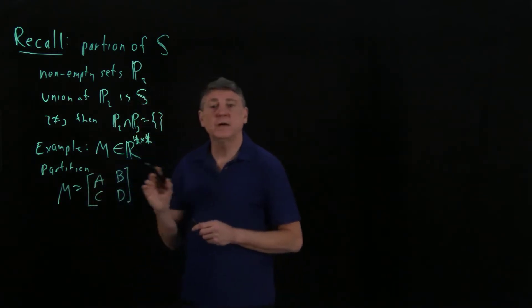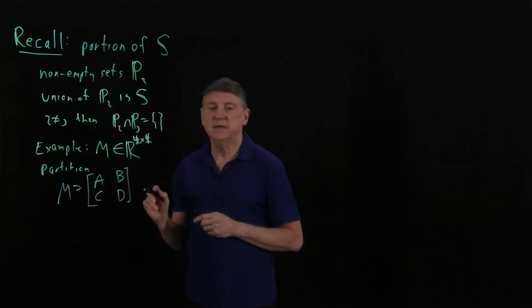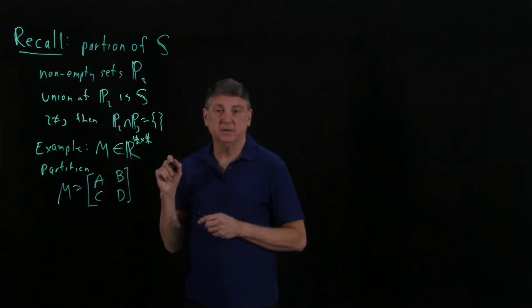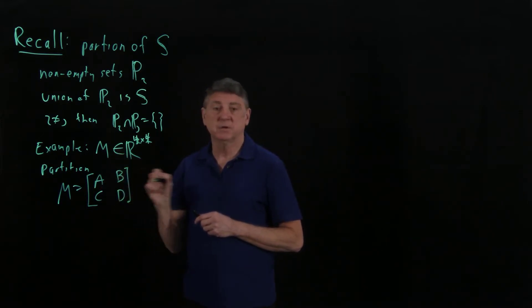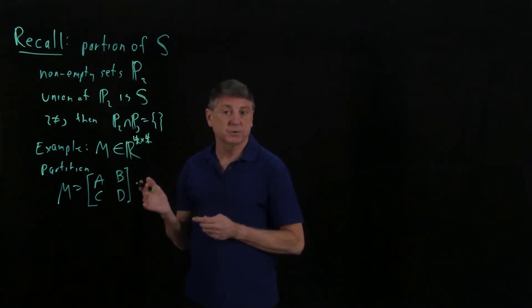And if we work out all of the rules of partitioning, what we'll see is that if we add two matrices together, that if we partition them in the same way, then all we have to do is add the blocks together. And that can be useful, for example, if some of these blocks are all zeros, we can simply disregard those entries.